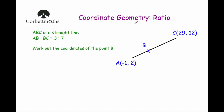Welcome to this Corporal Maths video on Coordinate Geometry. In this video we're going to focus on Coordinate Geometry questions that involve ratio. Here we've got a question that says the line ABC is a straight line and the point B is on the line such that the ratio of AB to BC is 3 to 7. So B is closer to A than it is to C, and we've been asked to work out the coordinates of the point B.